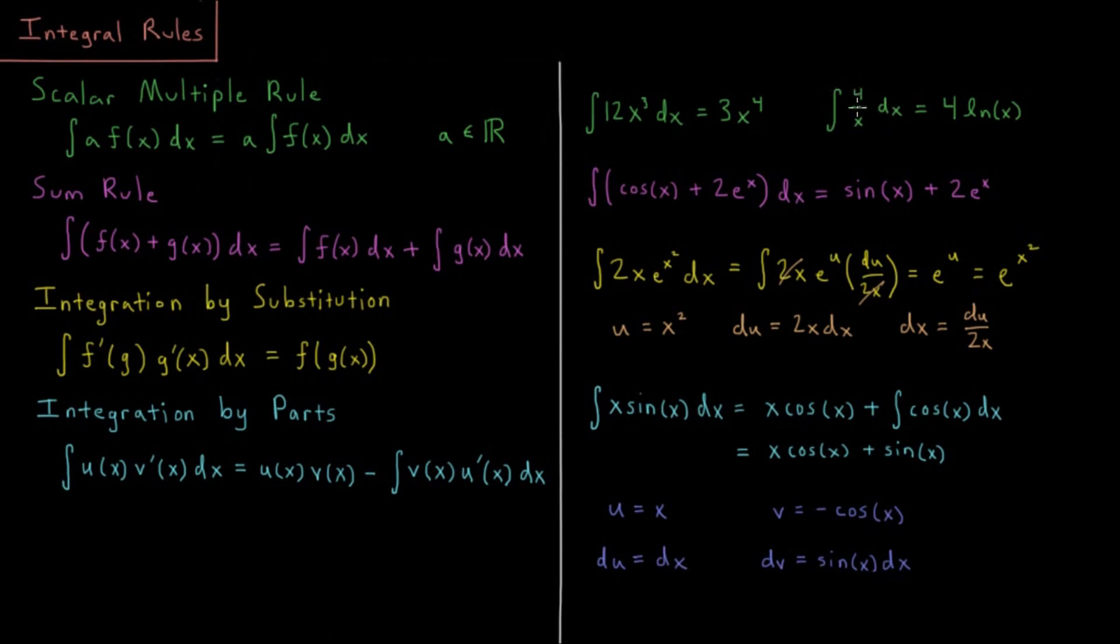The integral of 4 over x dx, well according to the inverse rule, the integral of 1 over x dx is natural log of x, so 4 times that is just 4 times the result, 4 times log of x.